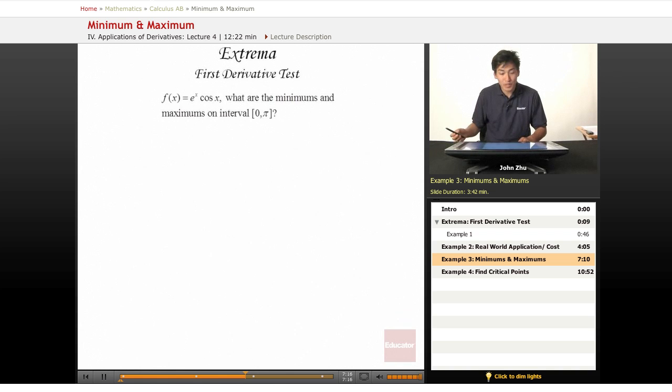We have f of x equals e to the x times cosine of x. To find the minimum and maximum, we know we have to take the derivative.